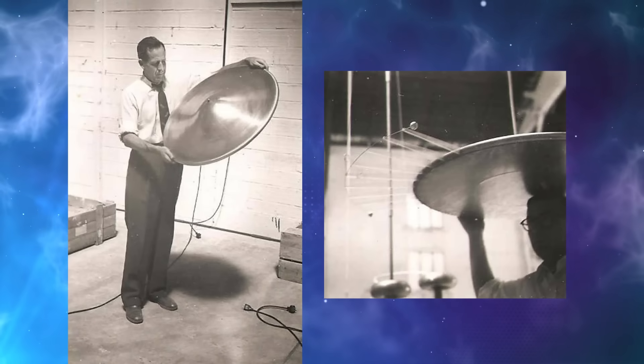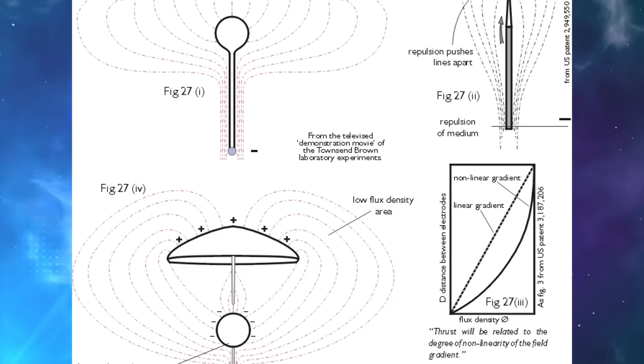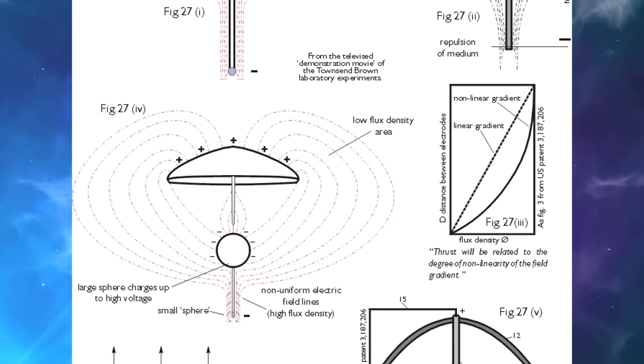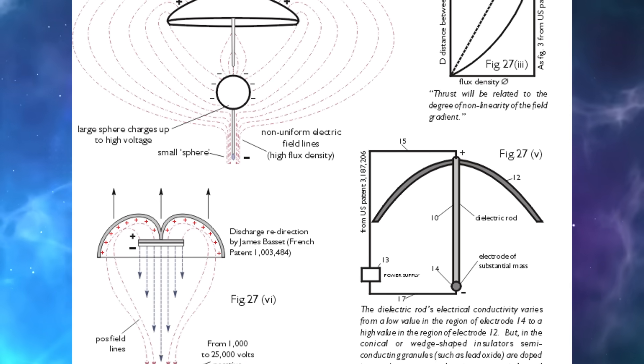Back in the 1920s, Thomas Brown discovered that a charged capacitor with high voltage would exhibit thrust in the direction of the positive electrode. For several years he worked on these experiments, and this led to the Bifield-Brown effect. Today we see this in modern ion lifters.